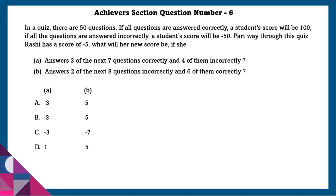Achiever section question number 6: In a quiz there are 50 questions. If all questions are answered correctly, a student's score will be 100. If all questions are answered incorrectly, a student's score will be minus 50. Partway through the quiz, Rashi had a score of minus 5. What will be her score if she answers 3 of the next 7 questions correctly and 4 of them incorrectly?